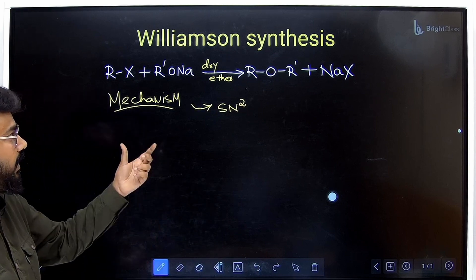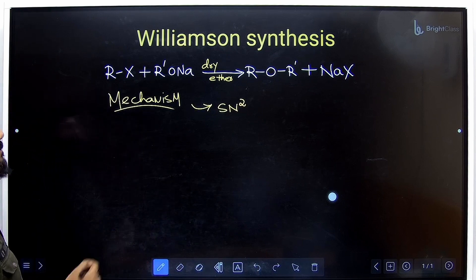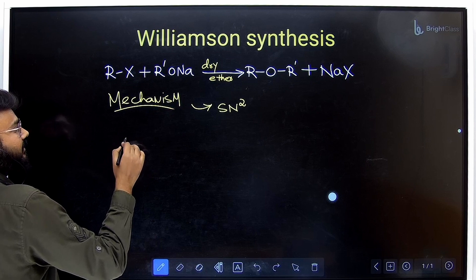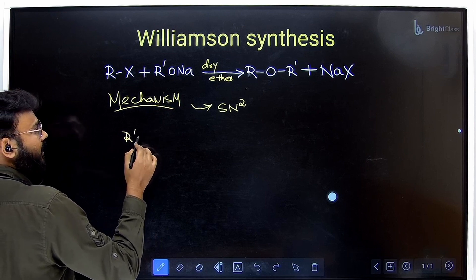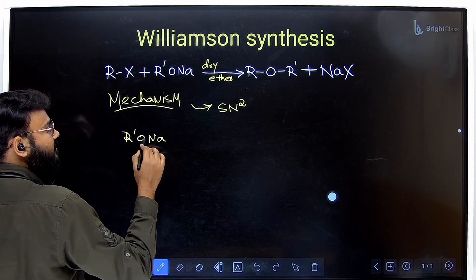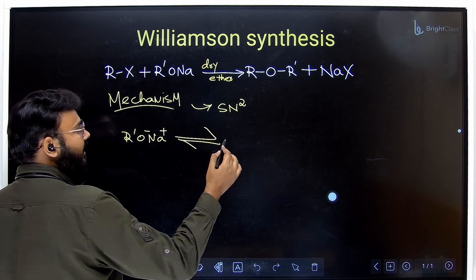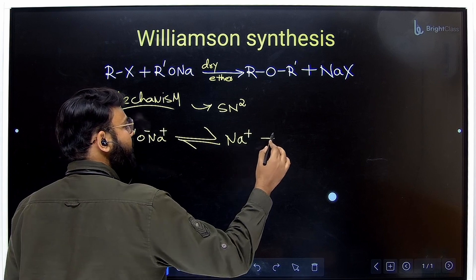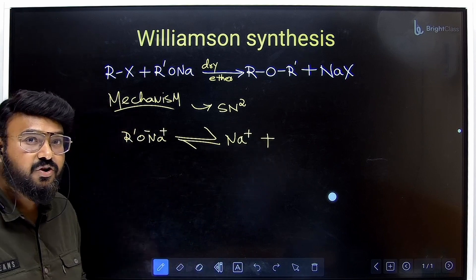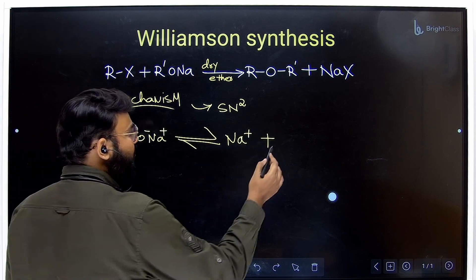Now remember, first thing what will happen in the presence of dry ether, our alkoxide, sodium alkoxide R'ONa. So what will happen here, we will remove the cation, so Na+ will be removed and it generates a very strong nucleophile which is the alkoxide ion.